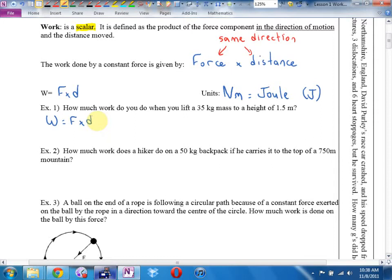The equation then, symbol for work is a capital W and the equation is force times distance, FD. What are the units for work? What do I measure force in? Newtons. What do I measure distance in? It's a Newton meter, but this one is so important, we've given it its own name. We call this a Joule, symbol capital J, named after a scientist whose last name was Joule. Example one, how much work do you do when you lift a 35 kilogram mass to a height of 1.5 meters?